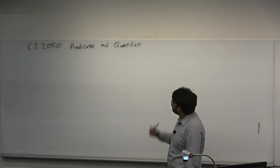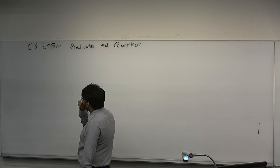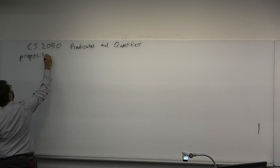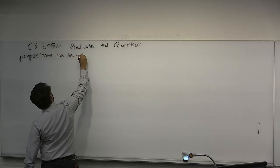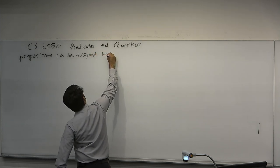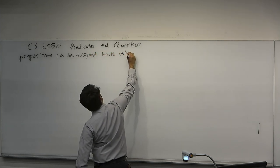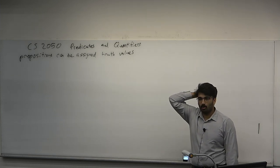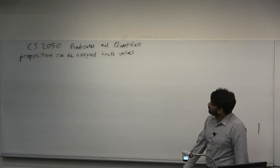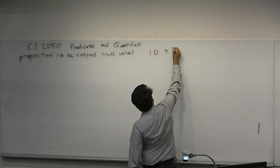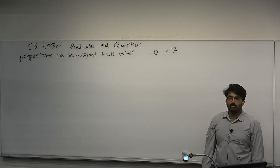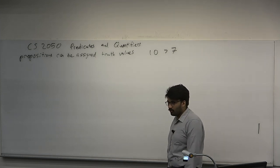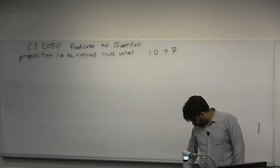Predicates and quantifiers. We mentioned last time about propositions — propositions can be assigned truth values. You look at a declarative sentence and you say that is true or that is not true. For example, '10 is greater than 7' is a proposition, because you can look at it and say that's true. Those are declarative parts of language which can be assigned a truth value.